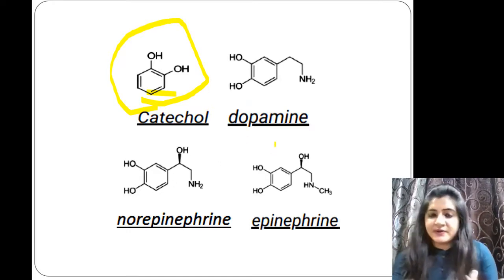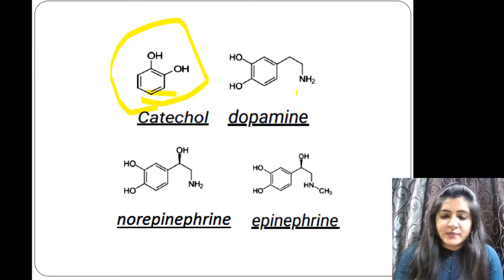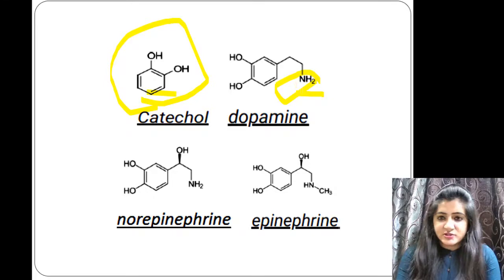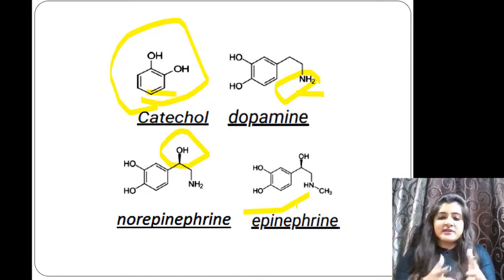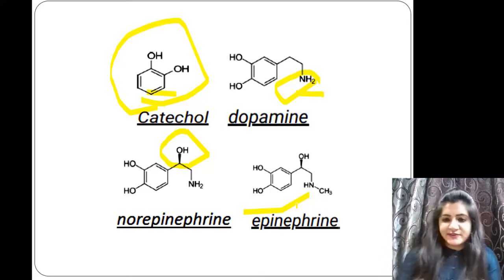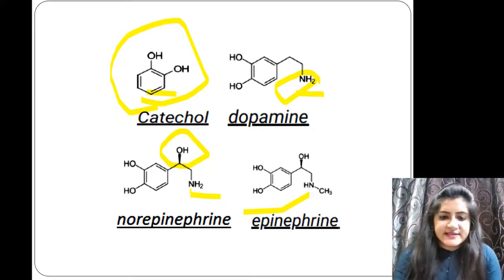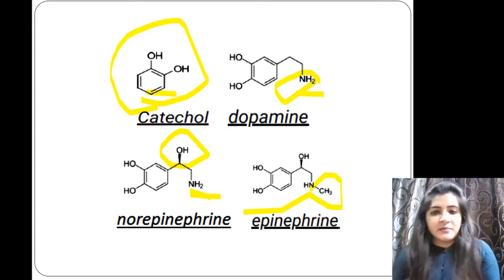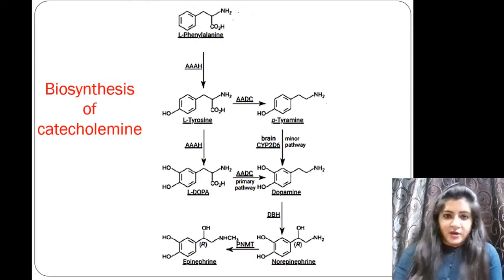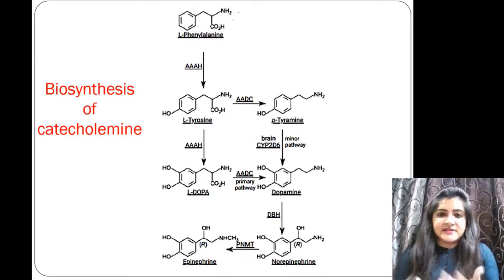From the catechol parent ring we can write the structures of dopamine, norepinephrine, and epinephrine. In norepinephrine there is an NH2 group at the second position, along with three hydroxyl groups. In epinephrine there are also three hydroxyl groups, but the chemical difference is that epinephrine has an NHCH3 group — an additional methyl group — instead of NH2.